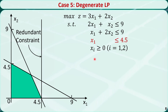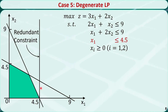The last case is called degeneracy. It is caused by one or more redundant constraints and may cause the simplex method extra iterations. A redundant constraint is one that can be removed without changing the feasible region. In this example, the constraint x1 ≤ 4.5 is a redundant constraint. Formally, a linear programming problem with n decision variables is degenerate if at least n+1 constraints, including the sign restrictions, are binding at an extreme point. Here n = 2, and there are 3 constraints binding at this point — it is an intersection of 3 lines.